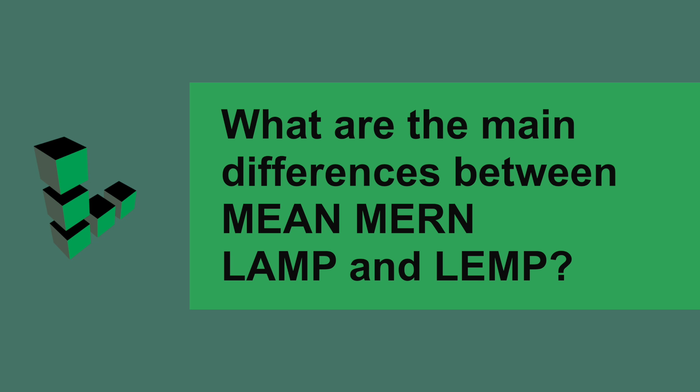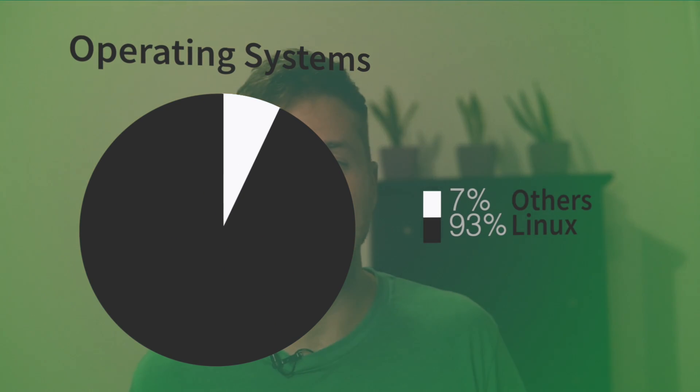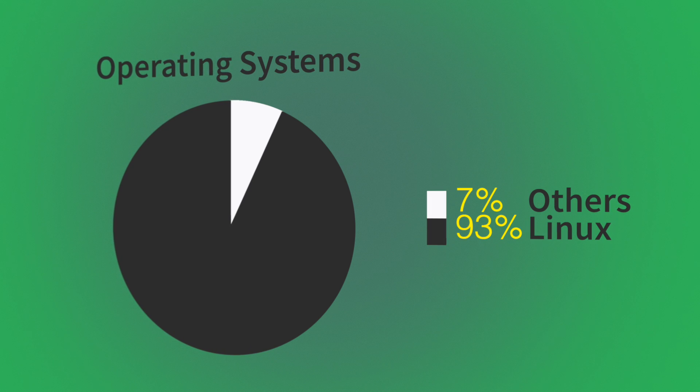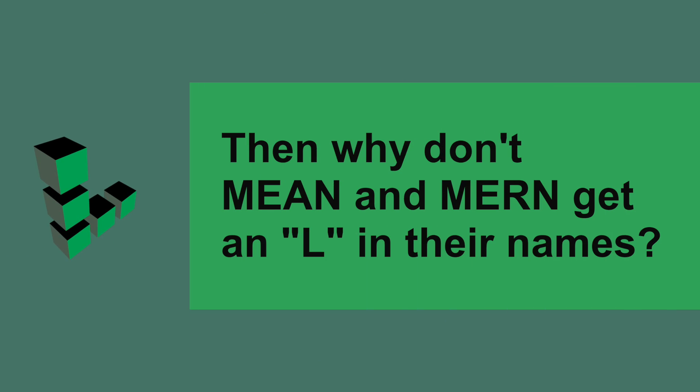So, what are the main differences between MEAN, MERN, LAMP, and LEMP? Now that we know the technologies between the stacks, let's look into their similarities and differences. We know that the L in LAMP and LEMP stands for Linux. However, the MEAN and MERN stacks usually have Linux too. Linux is the most popular operating system in the world — in fact, 93% of the internet is run on it. So why don't MEAN and MERN get an L in their names? It's because some technologies are assumed in all tech stacks, and sometimes certain letters are just omitted.